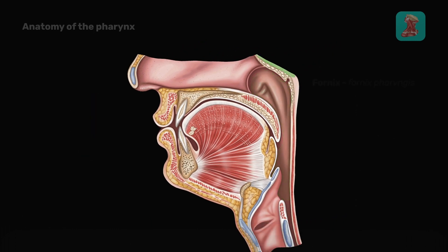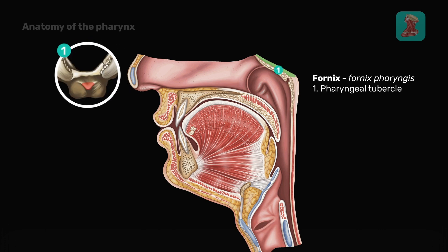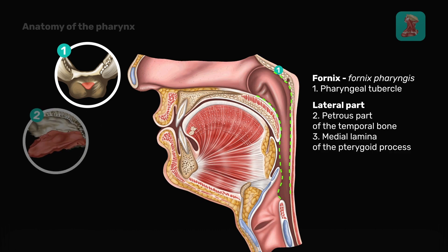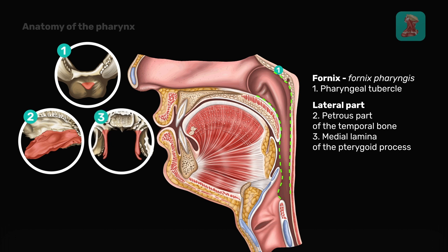The superior part of the pharynx is called the fornix and is attached to the pharyngeal tubercle of the occipital bone. The lateral part of the pharynx attaches to the petrous part of the temporal bone and the medial lamina of the pterygoid process.